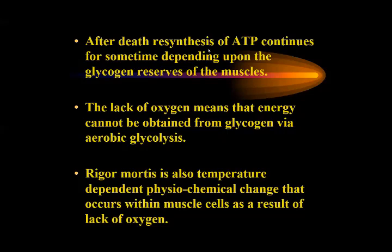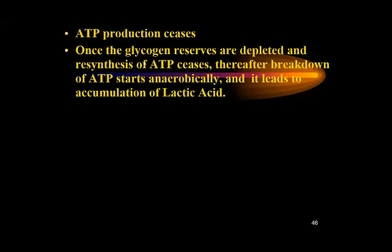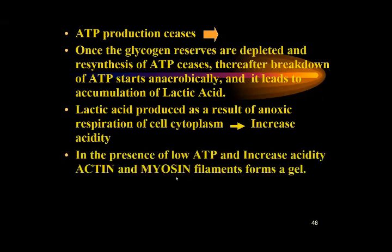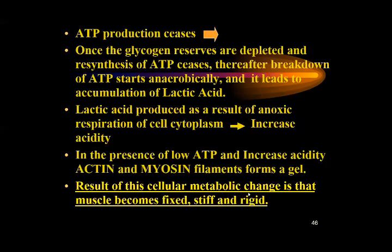After death, once the re-synthesis of ATP continues for some time depending on glycogen reserves, the lack of oxygen means energy cannot be obtained via aerobic glycolysis. Rigor mortis is a temperature-dependent physico-chemical change occurring within muscle cells as a result of lack of oxygen. Once glycogen reserves are depleted and re-synthesis of ATP ceases, breakdown of ATP begins anaerobically, leading to accumulation of lactic acid, which increases the acidity of the muscles. In the presence of low ATP and increased acidity, the actin and myosin filaments form a gel, causing the muscles to become fixed, stiff, and rigid — then rigor sets in.